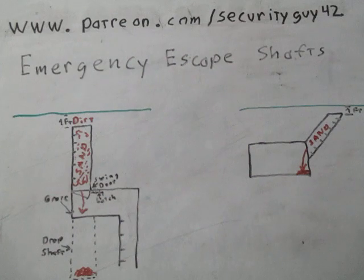Now into the meat and potatoes of the video here. Emergency escape shafts. Whatever tunnel system you put in, you must have some way to escape in an emergency. It could be because the enemy has found your primary entrance and exits. They have them blocked off.